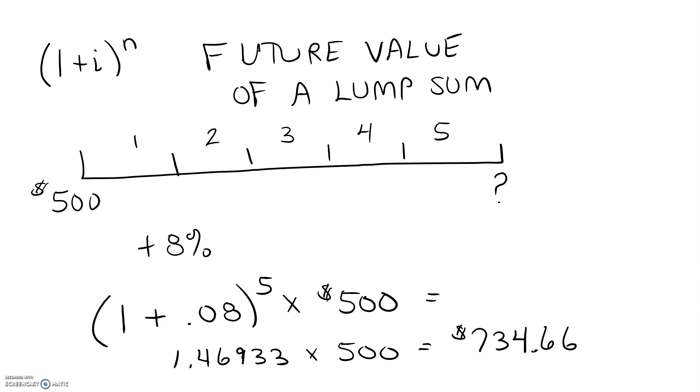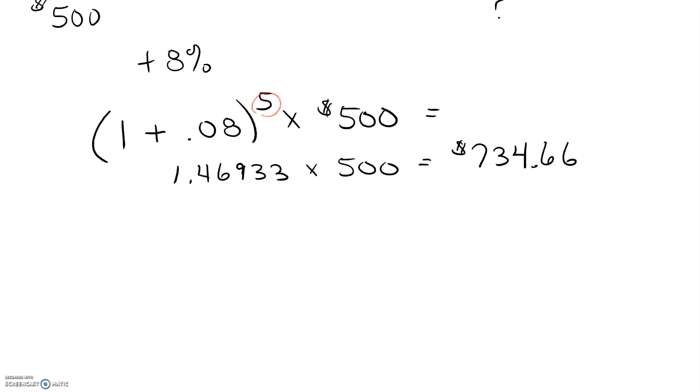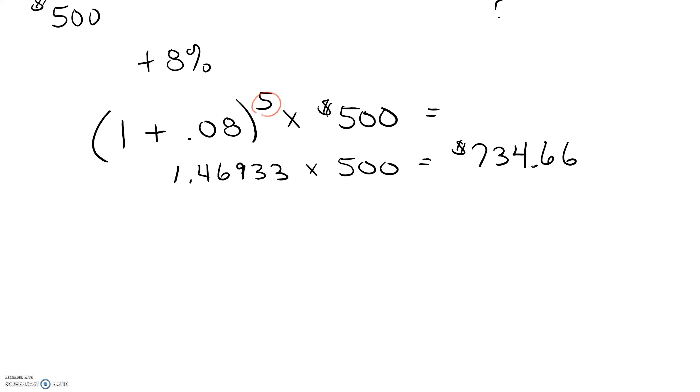If I wanted to take this out further all I would have to do is change this exponent. Let's take it out further and let's see what happened. So let's imagine that we now have a timeline that's going to be out for 40 years and we would have $500 and we want to know how much will that grow at 8% interest.